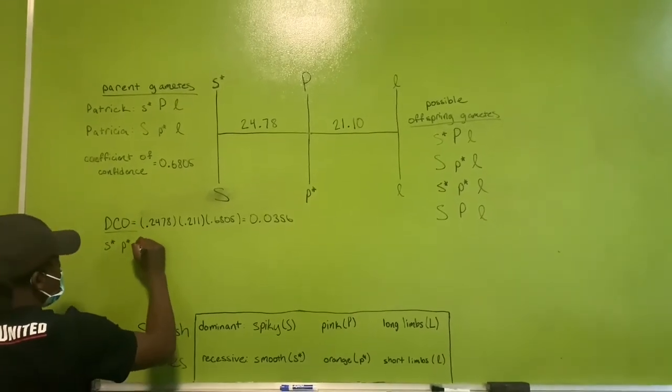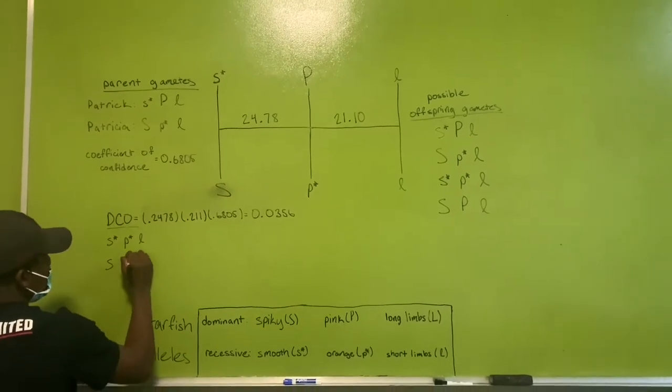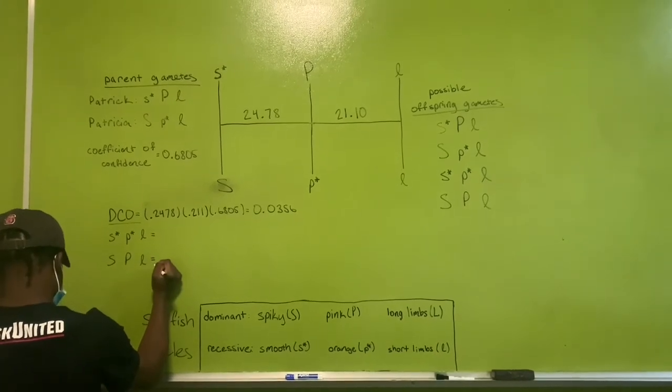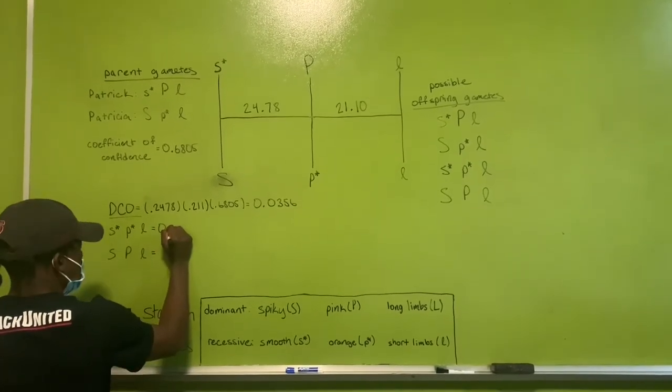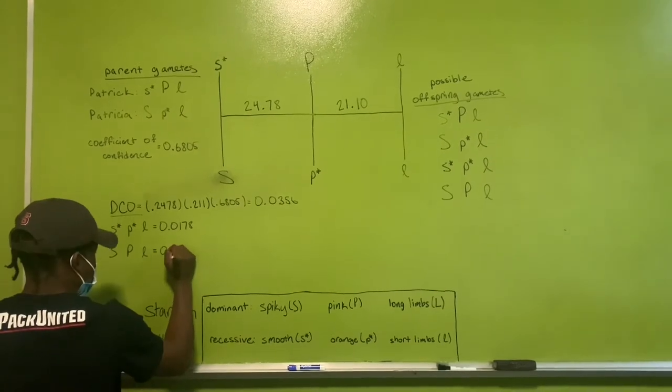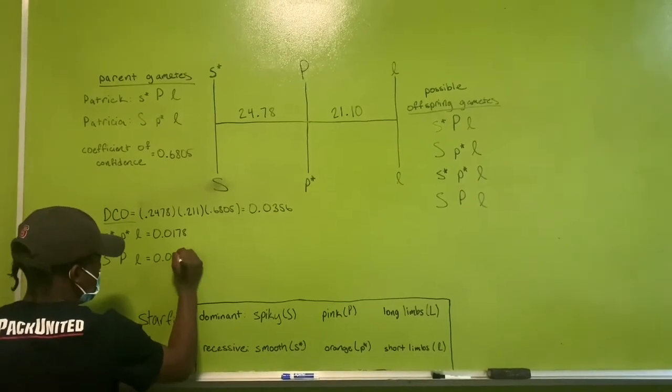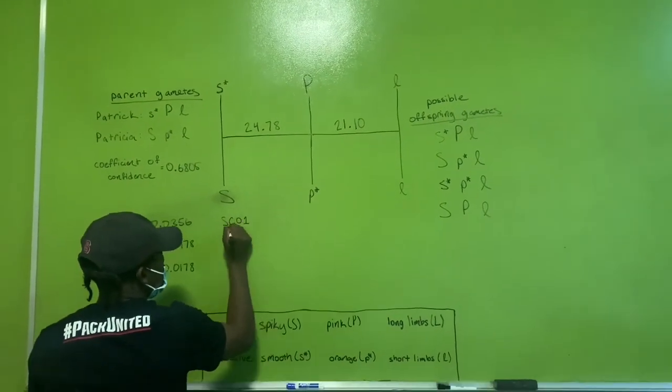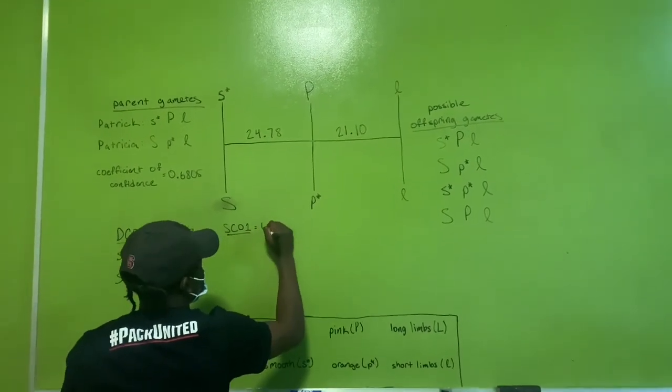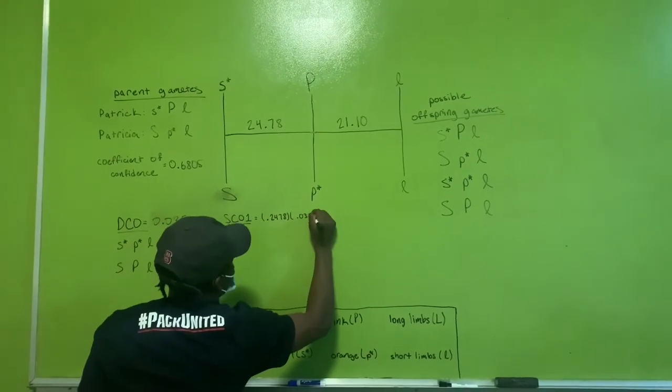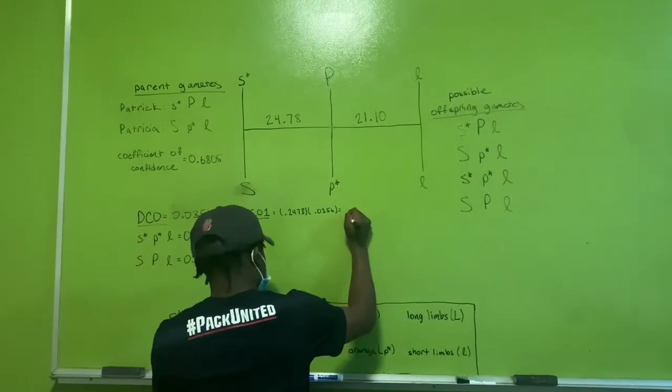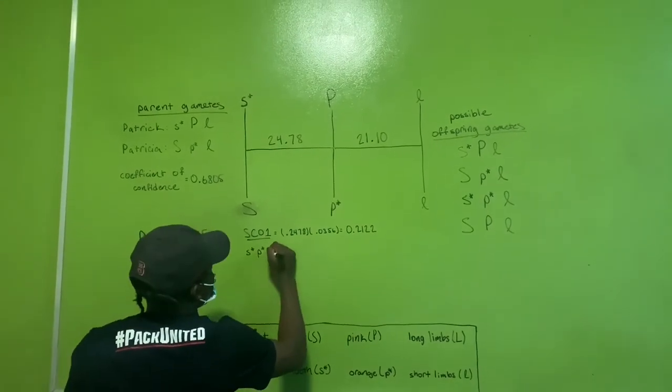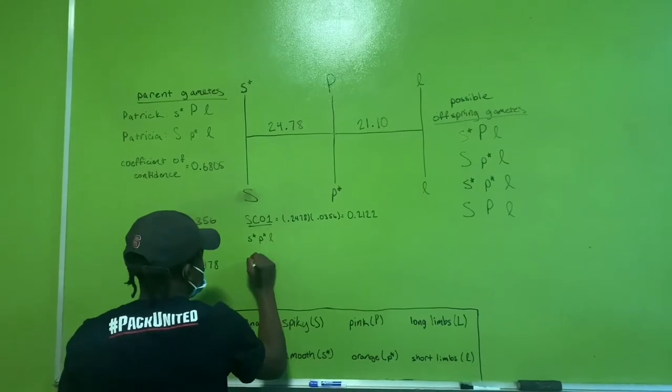To calculate the probability of a single cross at position one, I multiplied the r1 value and the value of the double cross event, and then I divided that value by two to calculate the probability of a single cross gamete at position one.